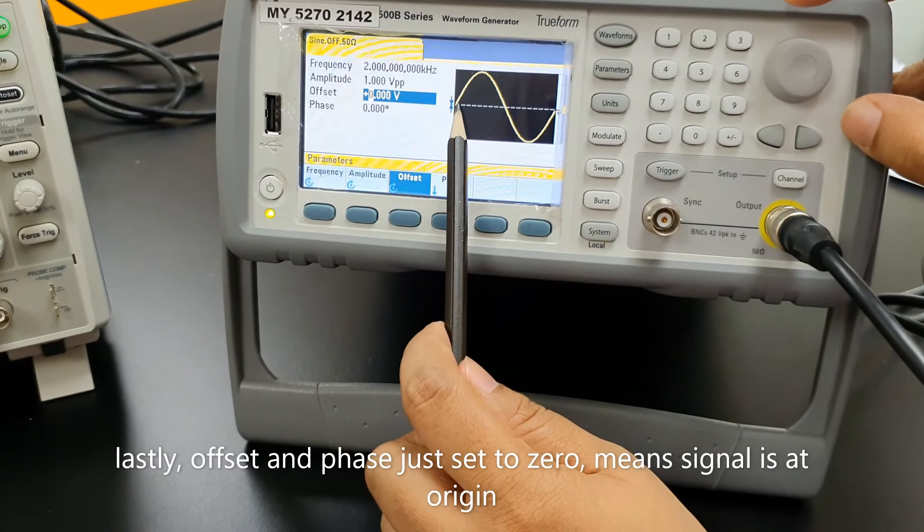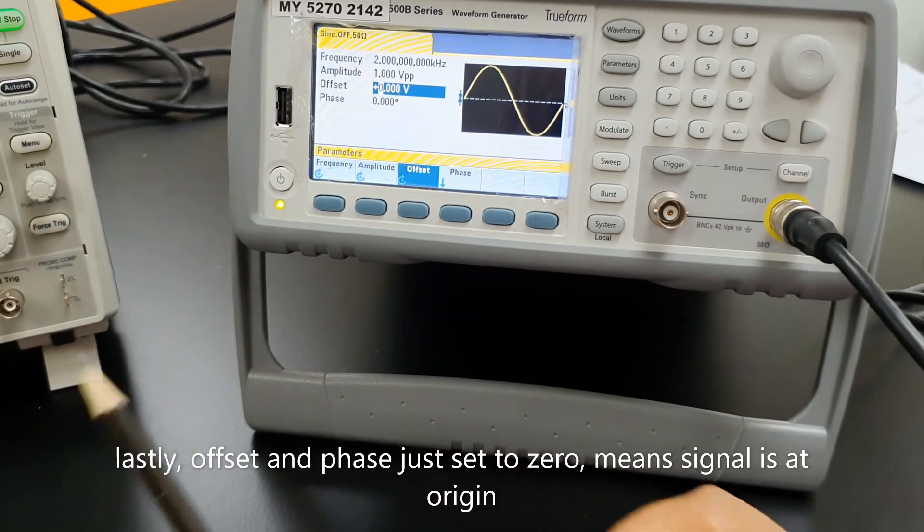Lastly, offset and phase are just set to zero, which means the signal is at origin.